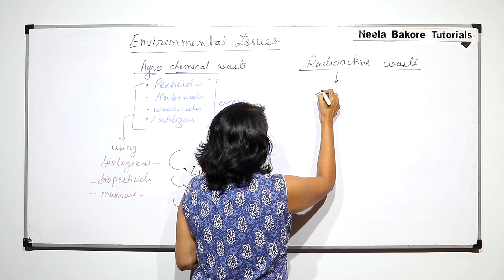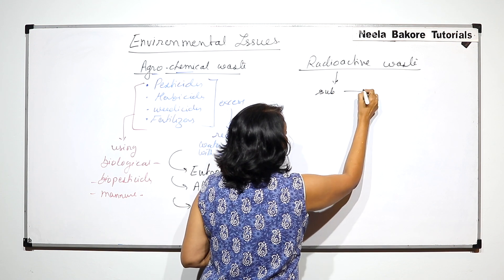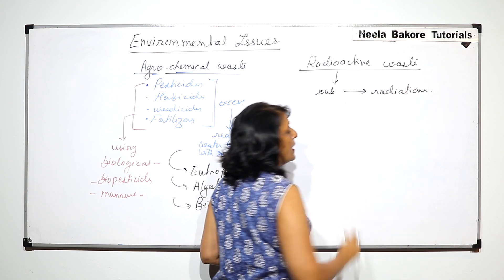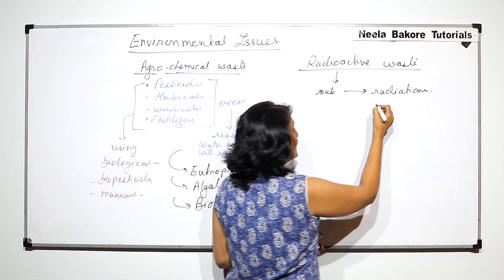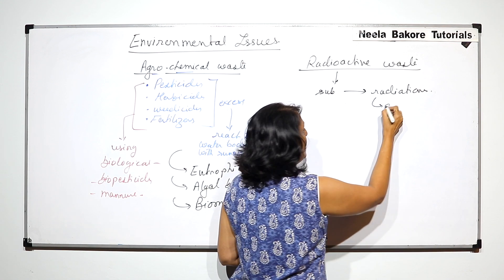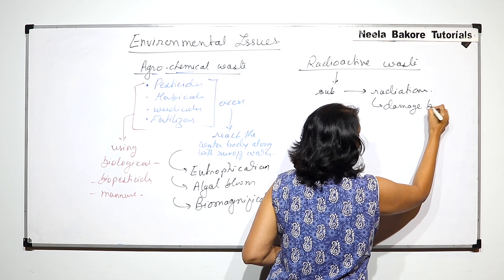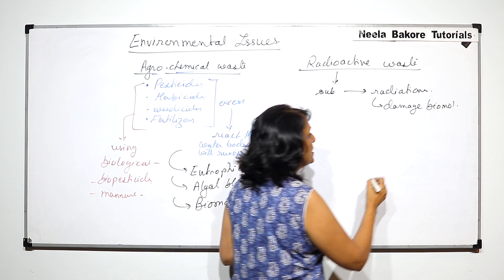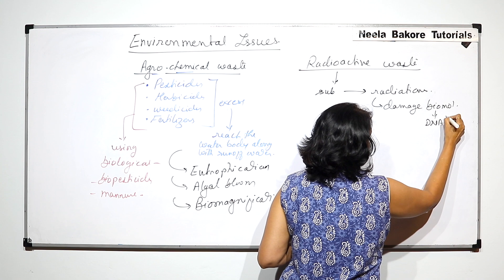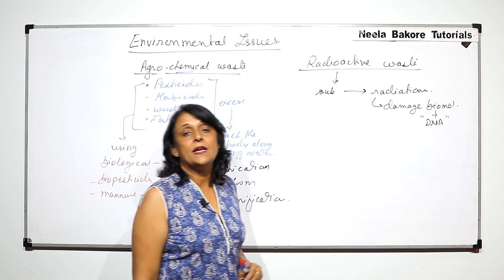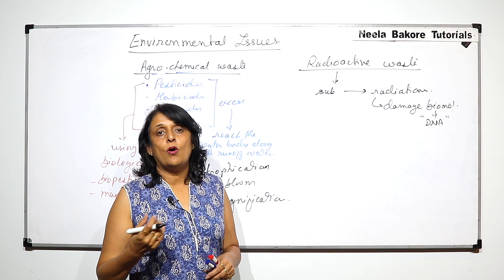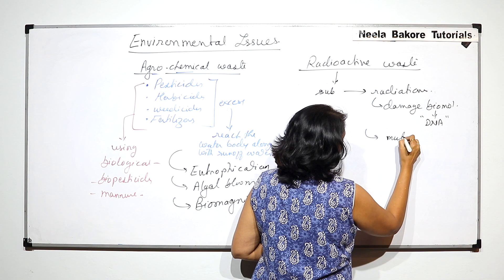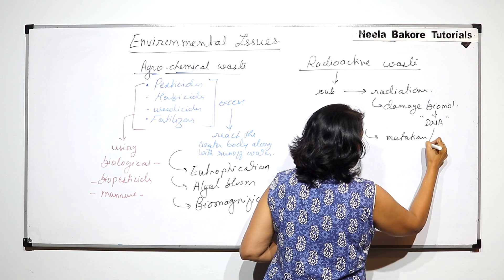Radioactive substances release radiations like alpha, beta, and gamma rays. These radiations damage biomolecules. One special biomolecule that gets damaged is DNA. If DNA gets damaged, it results in either mutation or cancer. So these radiations ultimately cause mutations and cancer.